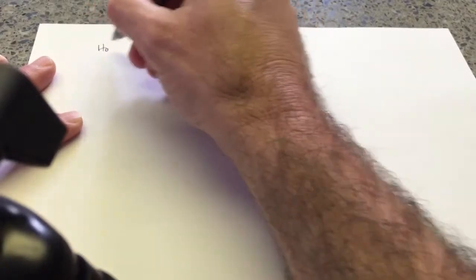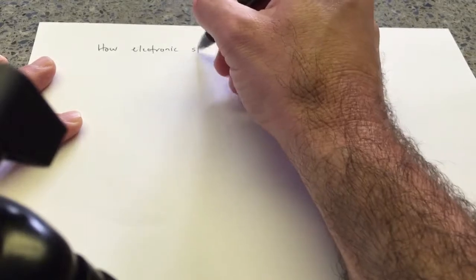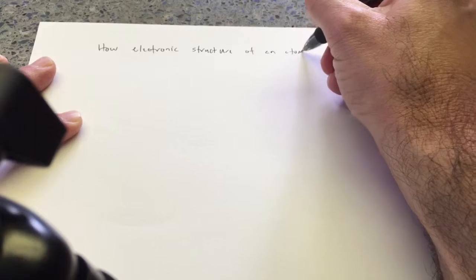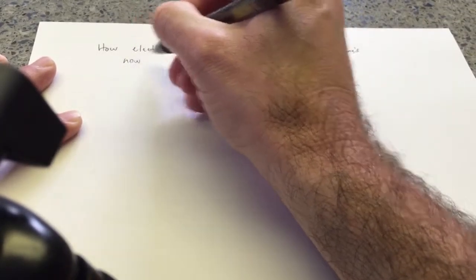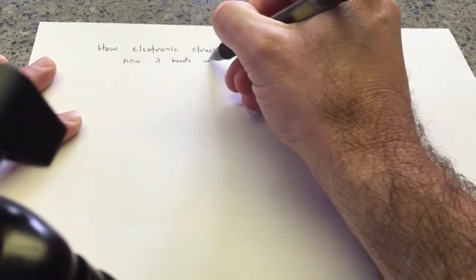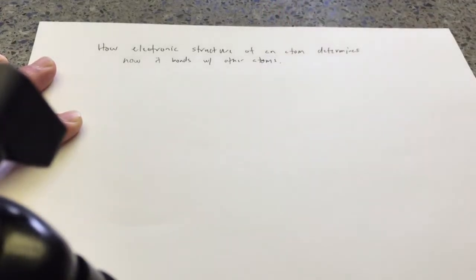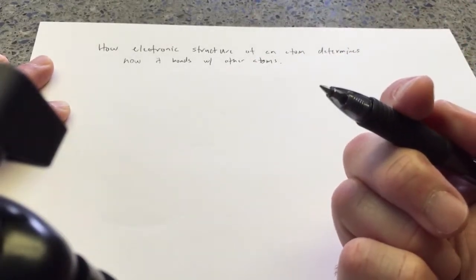Hello and welcome back. In this brief mini YouTube lecture, we're going to cover how electronic structure of an atom determines how it bonds with other atoms. And we'll start with the four familiar atoms which we talked about in this lecture that this video is associated with.